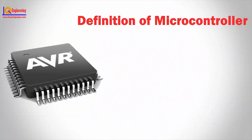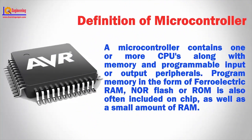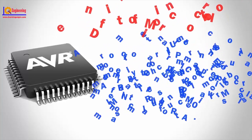Now we will see the definition of microcontroller. A microcontroller contains one or more CPUs along with memory and programmable input or output peripherals. Program memory in the form of ferroelectric RAM, NOR flash, or RAM is also often included on chip, as well as a small amount of RAM.